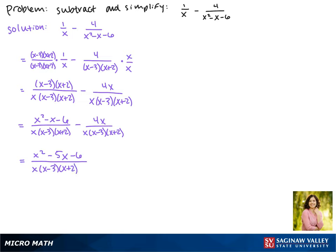So now we want to factor the numerator to see if anything can cancel. Be careful on this one. The factors of negative 6 that make negative 5 are not negative 3 and negative 2. That wouldn't give us a negative 6. It's actually negative 6 and positive 1. So here we won't be able to cancel anything.